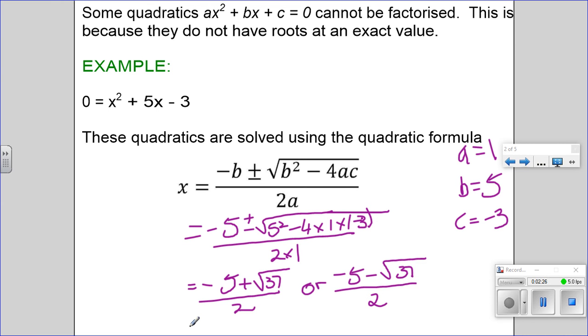But my other solution because I get 2 roots is -5 - √37 over 2. By putting both of these in the calculator I get that this one is 0.54 and this one is -5.54.